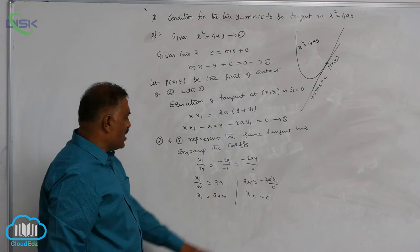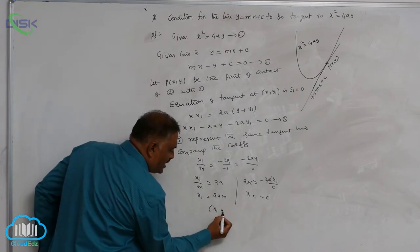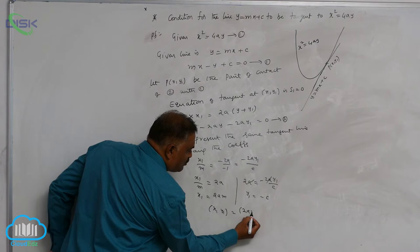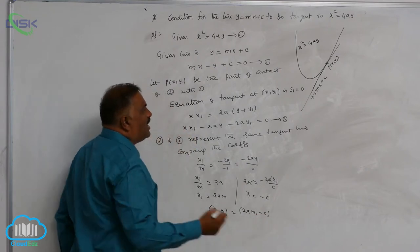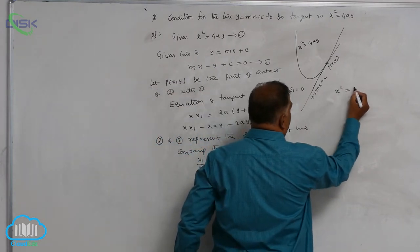Now substitute the point, this point (x1, y1), this is (2am, minus c) in the parabola x square equal to 4ay.